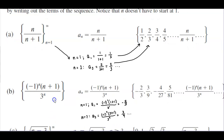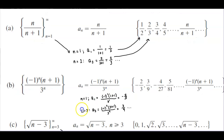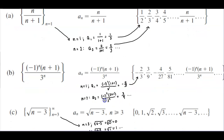For part b, we have the set of negative 1 to the nth power times n plus 1 divided by 3 to the nth power. Writing it as a formula, a subscript n equals that expression. When n equals 1, we plug 1 in for n and evaluate, getting negative two thirds as the first term. When n equals 2, we plug 2 in for n and get 3 ninths as the second term of the sequence, and so on.